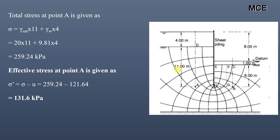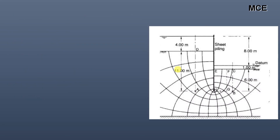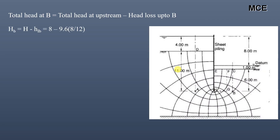Similarly for point B, the total head at B equals total head at upstream minus head loss up to point B. The number of equipotential drops up to B are 9.6, that is 1, 2, 3, 4, 5, 6, 7, 8, 9, and 0.6. The head loss per equipotential drop is 8/12, so the total head at point B equals 1.6 meters.